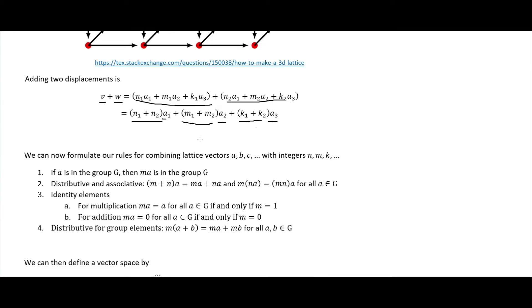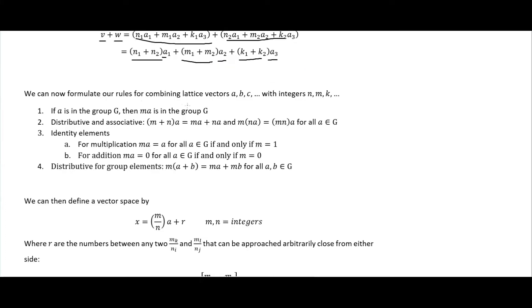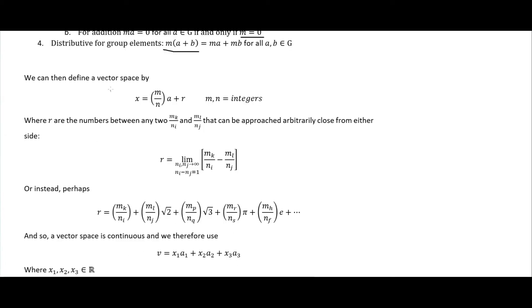We can now formulate our rules for combining lattice vectors a, b, and c with the integers n, m, and k. If a is in the group g then so is ma where m is some integer. Distributive and associative: we take our two integers here times our lattice vector and that's just equal to one times our lattice vector plus n times our lattice vector. The same is true for multiplication; it's associative for multiplication. For all a in our group g we have identity elements, which for multiplication is one and for addition is zero, and we are distributive here. For all a and b in g here we can therefore define a vector space.